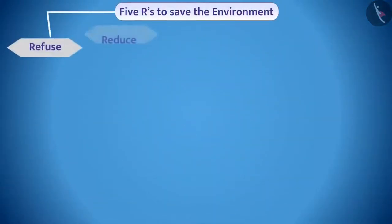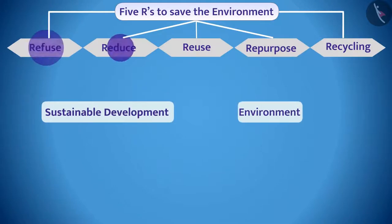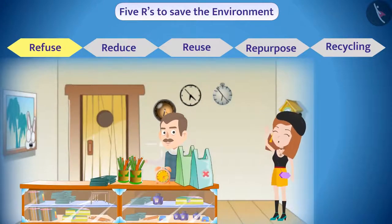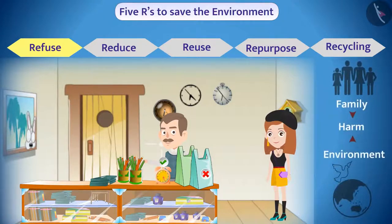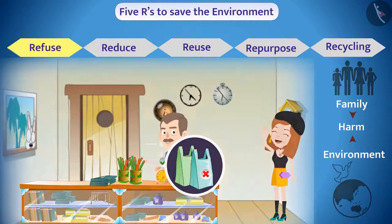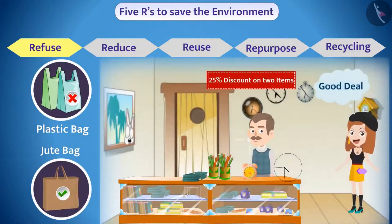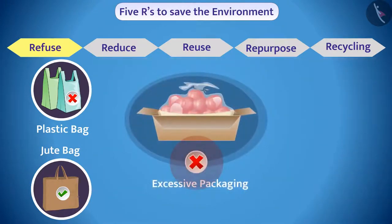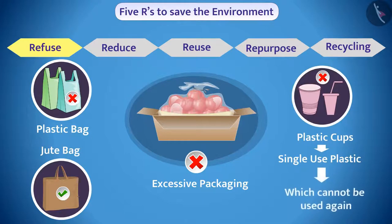The five R's to ensure sustainable development and to save the environment — let's learn them. The first R is Refuse. For example, we can refuse to take plastic bags; instead we can use cloth or jute bags. Many times when we see a good deal, we purchase things which are rarely useful to us — we can avoid buying such items. We can also deny excessive packaging, and we should refuse to take items like plastic cups which cannot be used again.